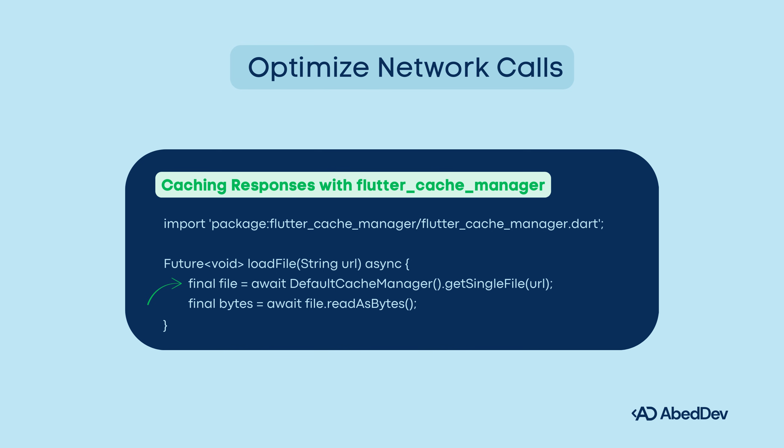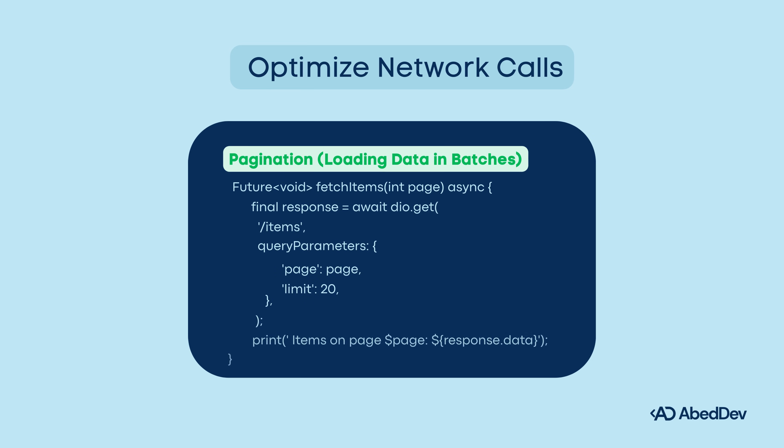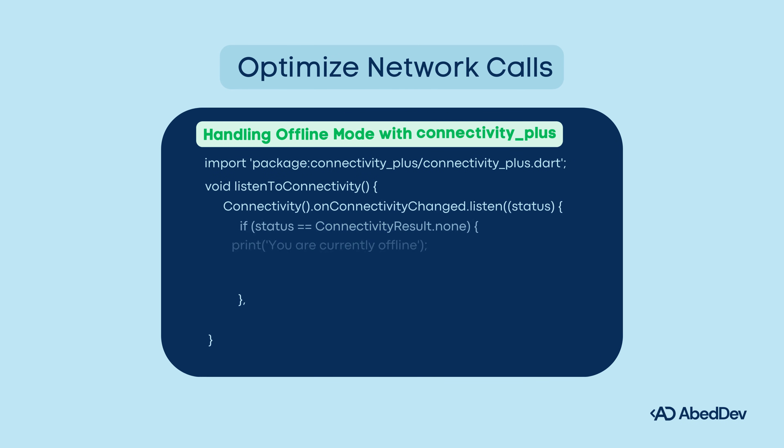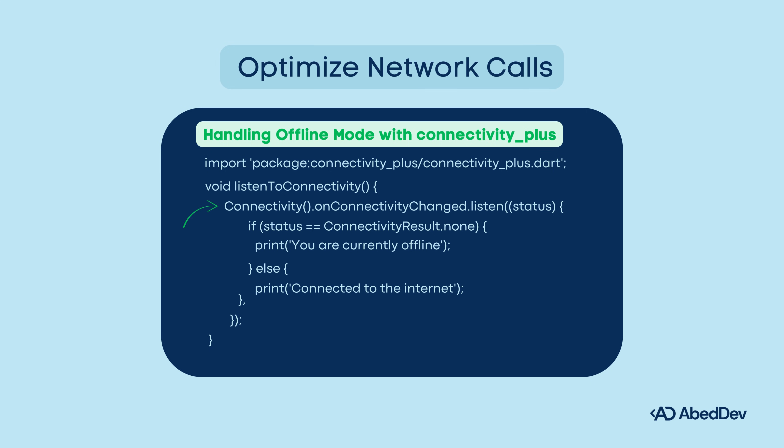Use DefaultCacheManager.getSingleFile to fetch from network or cache. Read file as bytes from cache for fewer server requests and a faster UI. For pagination, send page and limit query parameters to the server so it returns only the requested page of data — show the first page, then load the next as the user scrolls. This reduces data usage and memory. Handle offline mode with connectivity_plus: react to connectivity changes, show a banner or toast, or queue network requests until connection returns.